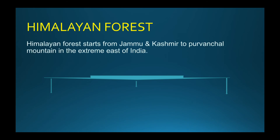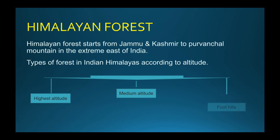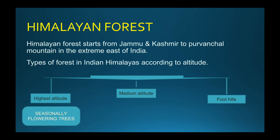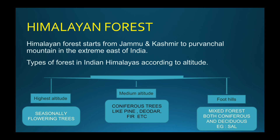Himalayan forests extend from Jammu and Kashmir to the Purvanchal mountains in the extreme east of India. According to altitude, there are three zones: high altitude, medium altitude and foothills. At high altitude, seasonal flowering trees are found. At medium altitude, coniferous trees such as Pine, Deodar and Fir are found. In the foothills, mixed forest is found — both coniferous and deciduous trees — for example, Sal.